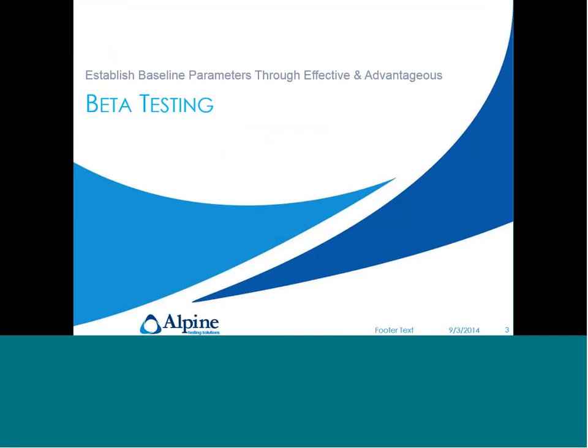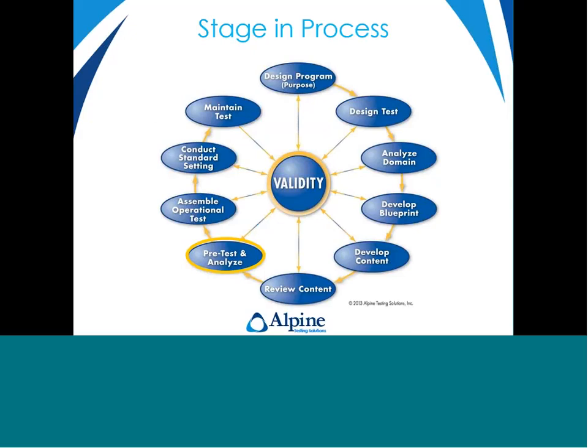We're going to start off with beta testing. In terms of the stage of the exam development process, we'll be focusing on psychometric analyses and operations. Looking at the validity-centered exam development process that Alpine advocates, we will be starting farther along the wheel at the pre-test and analyze stage. However, it's important to note all of the critical exam development and validation processes that would have occurred up to this point — by no means am I trying to discount any of that important work.